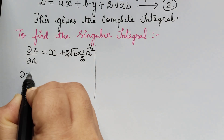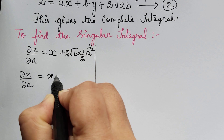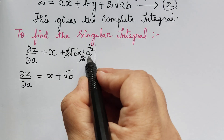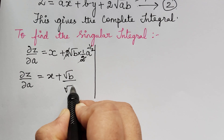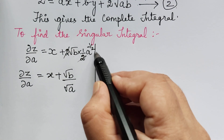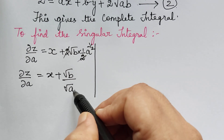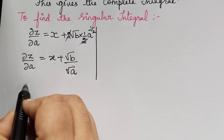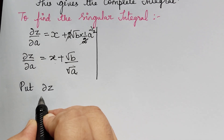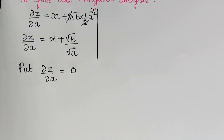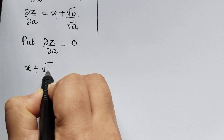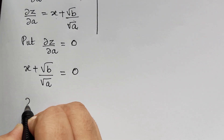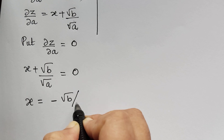Simplifying, the 2s cancel, giving ∂z/∂a = x + √b / √a. Setting ∂z/∂a = 0, we get x + √b/√a = 0, so x = −√b / √a.